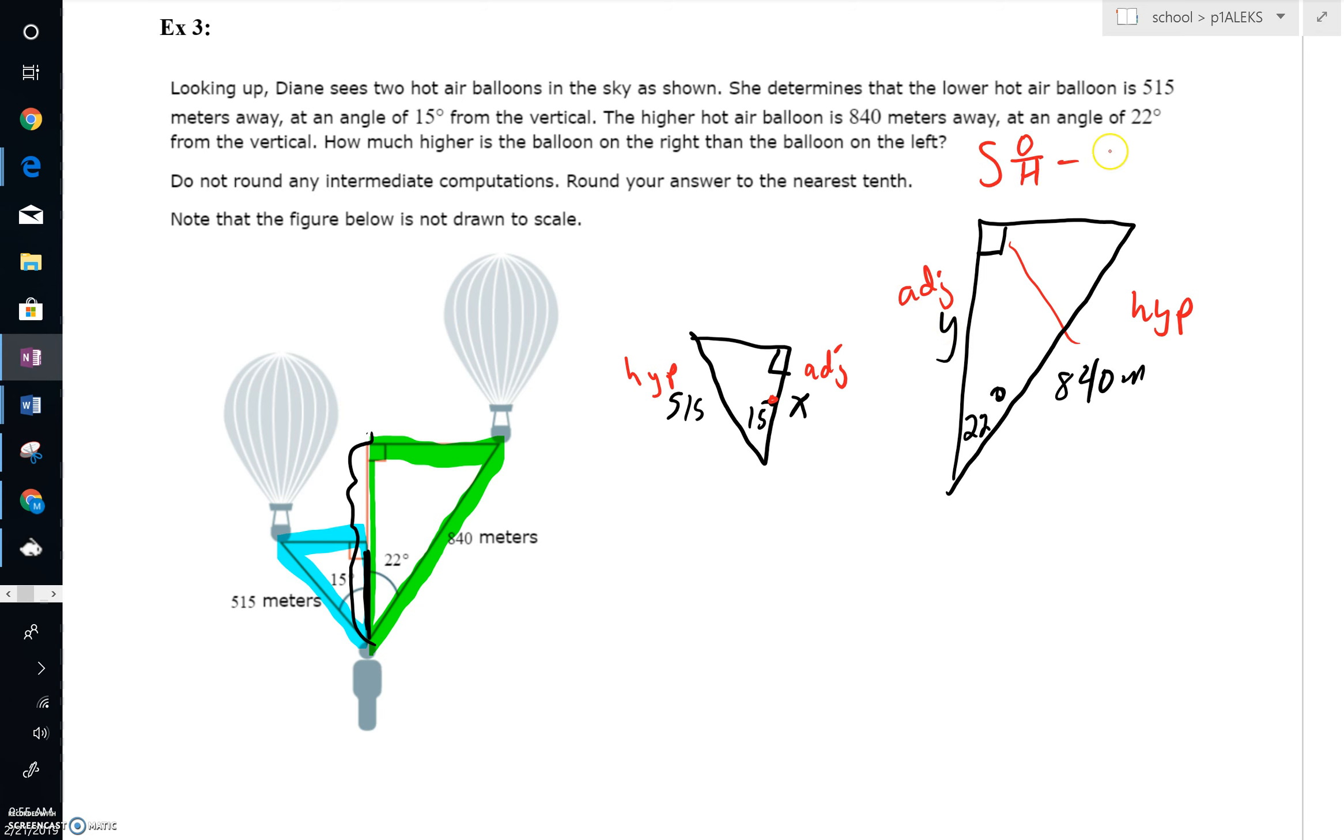We've got SOHCAHTOA. As we're working through SOHCAHTOA, A and H, that's cosine. So we can write the cosine of 15 degrees is equal to X all over 515. Right here, we can say the cosine of 22 degrees is equal to Y all over 840. That's your adjacent over hypotenuse. Let's cross-multiply. We'd get X is equal to 515 times the cosine of 15 degrees. Cross-multiplying, you'd get Y is equal to 840 times the cosine of 22 degrees.